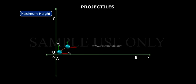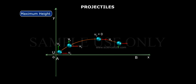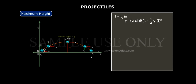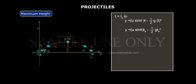Maximum height reached by the projectile is determined by substituting the time to reach maximum height, t = T_A, into y = U sinθ·t − (1/2)·g·t². Therefore, h_max = U sinθ·T_A − (1/2)·g·T_A².